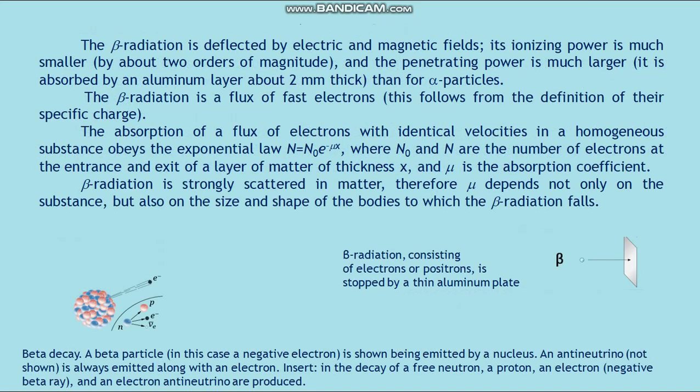The beta radiation is deflected by electric and magnetic fields. Its ionizing power is much smaller, by about two orders of magnitude, and the penetrating power is much larger. It is absorbed by an aluminum layer about 2 millimeters thick, compared to alpha particles. The beta radiation is a flux of fast electrons. This follows from the determination of their specific charge.